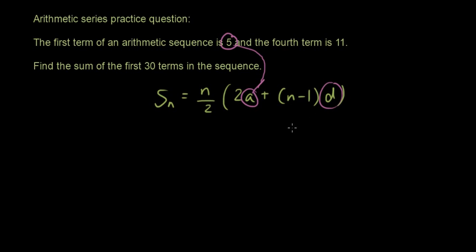We need to use our arithmetic sequence formula, Tn equals a plus n minus 1 times d. This is just for the arithmetic sequence, finding out the value of each term in the sequence. So we know the fourth term is 11, so when n is 4, Tn is 11.